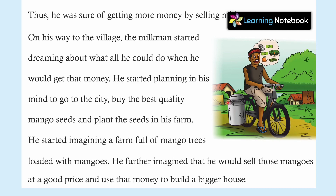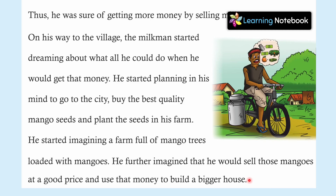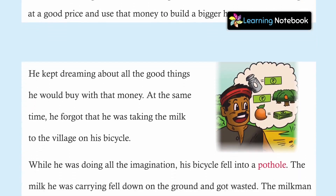देखिए यहां पर आपको यह picture दिखाई गई है — यह अपने bicycle पर जा रहा है, milk cans रखकर। और साथ-साथ वो सपने देखने लगा कि जब ज़्यादा पैसे होंगे, तो उसके farm में पूरे mango trees भर जाएंगे। He further imagined that he would sell those mangoes at a good price and use that money to build a bigger house. अभी तो इसके हाथ में पैसे आए भी नहीं थे, उससे पहले ही इसने सारे सपने देख डाले।